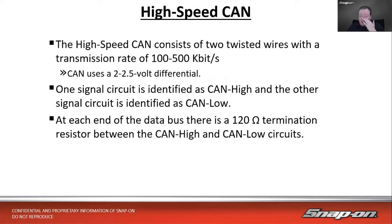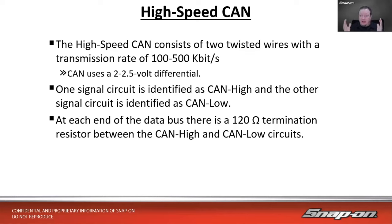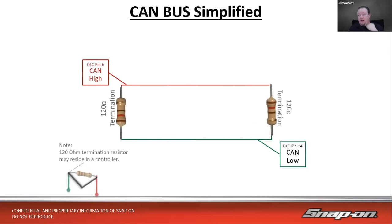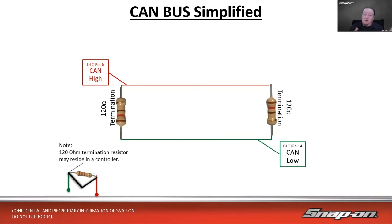CAN is pretty much the standard nowadays, standardized since about 2008. High-speed CAN consists of two twisted wires with a transmission rate of 100 to 500 kilobits per second, with some versions reaching up to 1 megabit. One signal circuit is CAN high, the other is CAN low. At each end of the data bus is a 120-ohm termination resistor between CAN high and CAN low, often residing inside a control module.